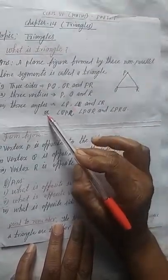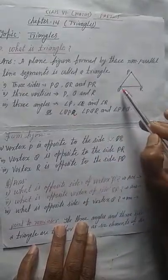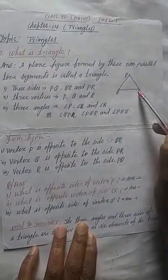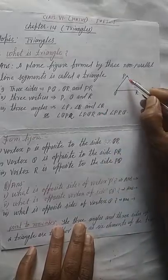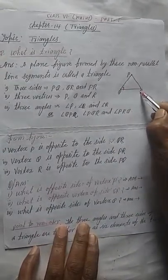Or we can write in this way also. Angle QPR means QPR. And angle PQR means angle P, angle Q, and R.